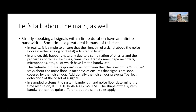Rick asks: given a band-limiting filter of finite slope, how much attenuation should the signal see once you reach the Nyquist limit? It's best if it's down below the resolution of the system — if you have 16 bits, it should be down 16 bits; 24 bits, it should be down 24 bits. In order to be accurate to your specified number of bits, your filter should be gone by the time you hit half the sampling rate under all circumstances.